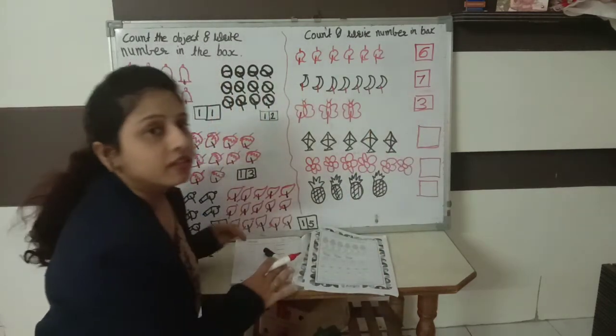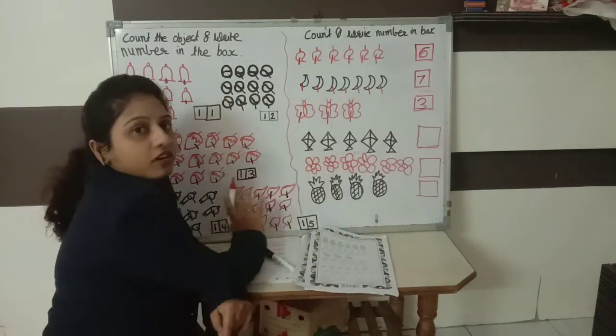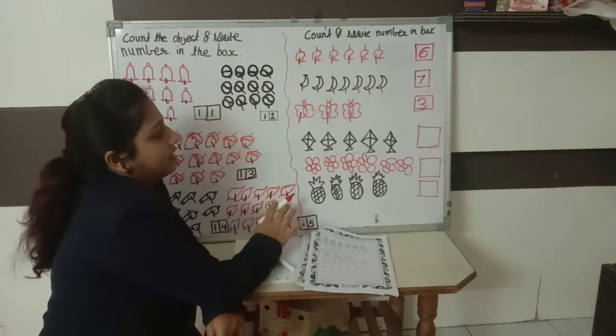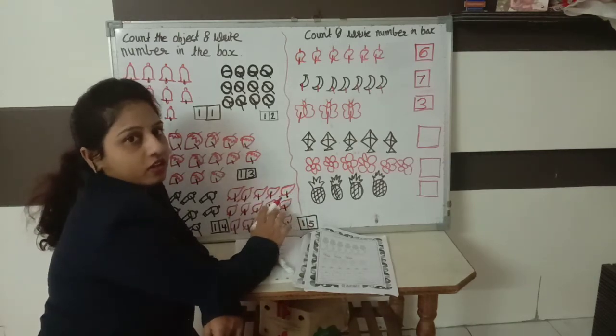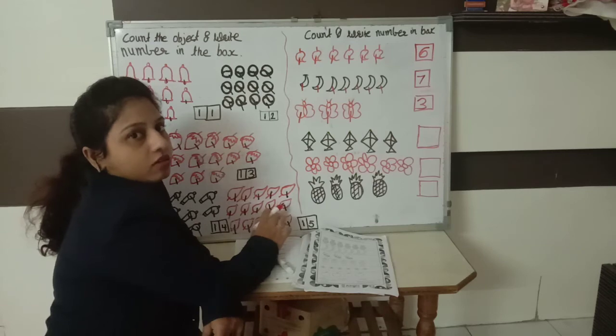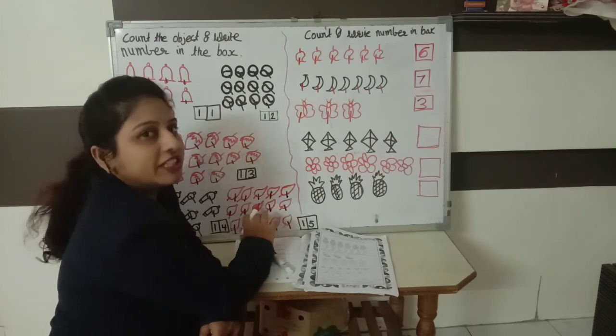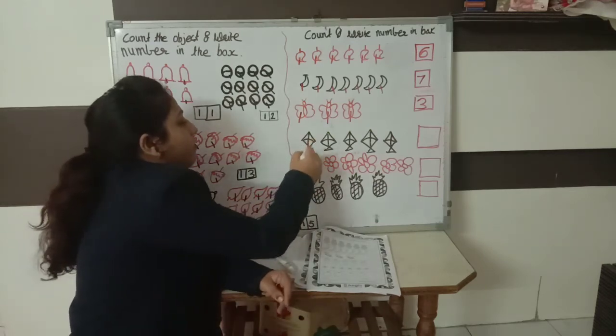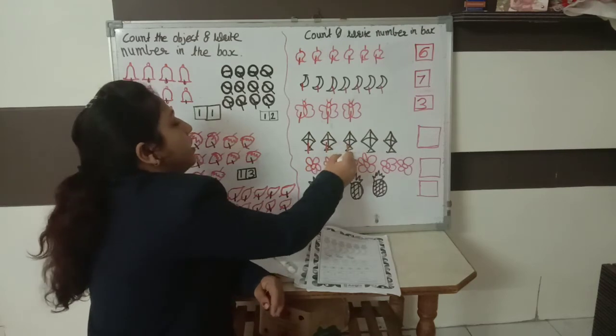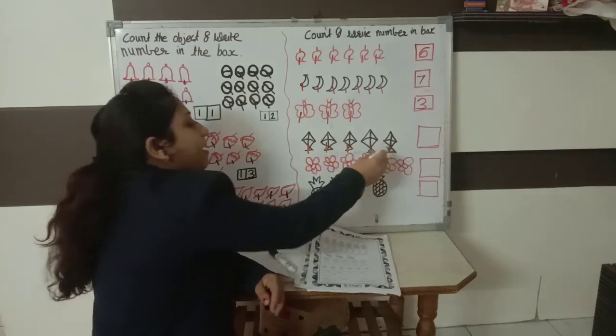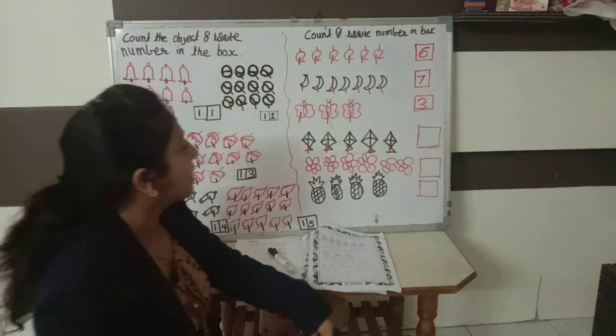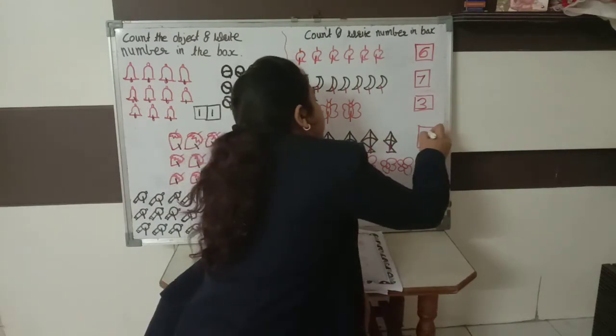Now what we are going to count? These are kites. How many are? Count them. So we are going to count. Let's count. 1, 2, 3, 4 and 5. How many kites? 5 kites.